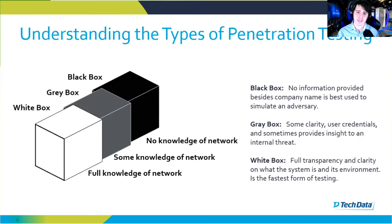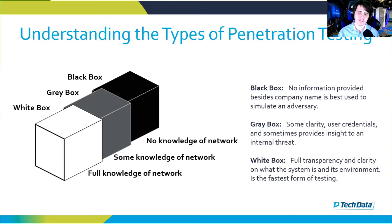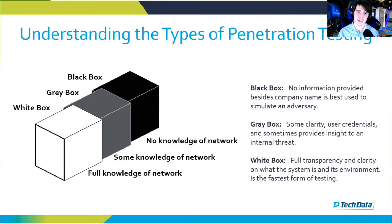Finally, we have white box testing. This is the fastest sort of testing because the penetration testers are given the most information possible — network layout, credentials, and pretty much any information available to go after. This is the quickest form of testing. However, it doesn't always provide a good understanding of what would actually happen if a threat actor like a nation state or hackers in general attempted to get into their network. More full transparency is given to the tester, but it's not very close to real world.